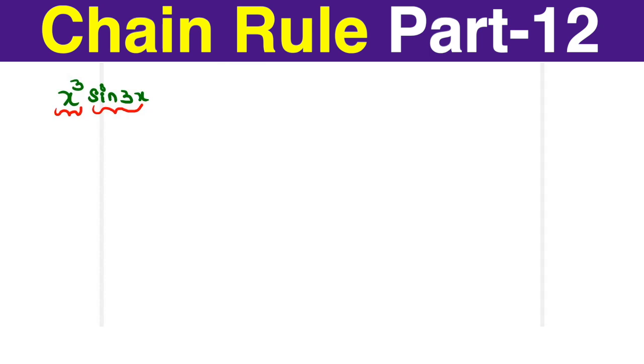Let us write the u, the u dash, the v and the v dash. So u is equal to x cube. So u dash is equal to 3x squared.